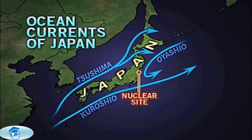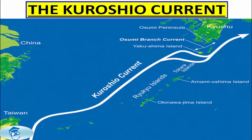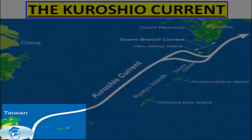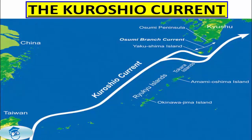Coming on to the currents of Japan, which include the Oyashio, Kiroshio, and Tsushima currents — the Tsushima being part of the Kiroshio. The Kiroshio Current is a strong western boundary current in the western North Pacific Ocean. It begins off the east coast of Taiwan and flows north-eastwards past Japan, where it merges with the easterly drift of the North Pacific Current. It is analogous to the Gulf Stream in the Atlantic Ocean, transporting warm tropical water northwards towards the polar region.